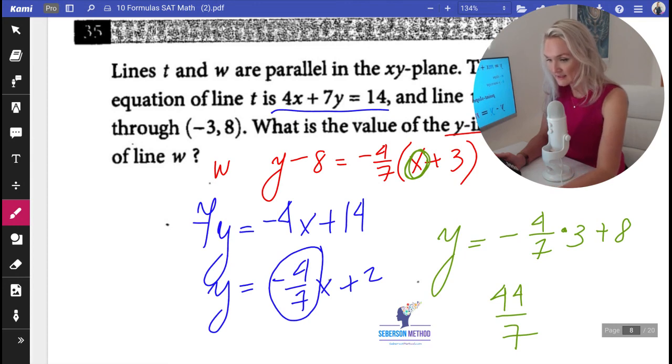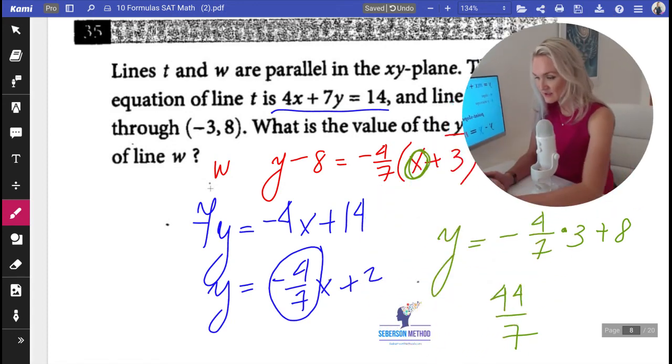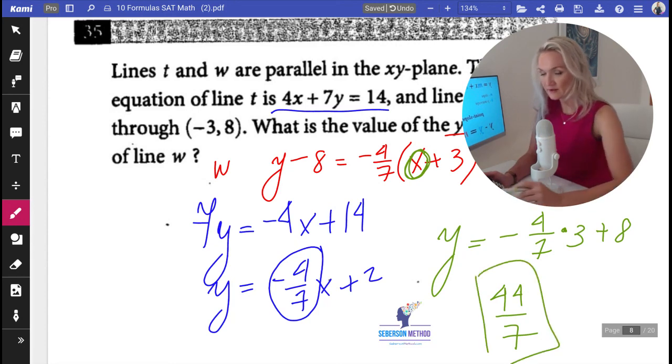Or you can say that this is, what is the value of the Y intercept? And this is a grid-in question. So you could grid in, yeah, I think 44 sevenths is the only answer to this that works here.